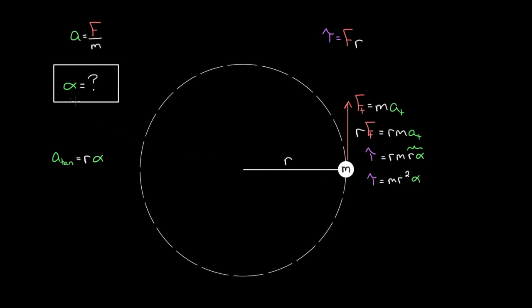And now we're close. If I wanted a form of Newton's second law, I could leave it like this, or solve for alpha: the angular acceleration equals the torque divided by this term M times R squared. This is the rotational analog of Newton's second law — torque divided by M·R².